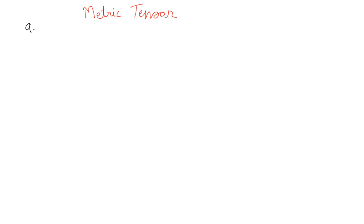Let's talk about the metric tensor, which we introduced in the last lesson. We know that what a metric tensor does is it produces the covariant component of a vector from the contravariant component, and vice versa. We have the equations: A_mu equals G_mu_nu A^nu, and similarly A^mu equals G^mu_nu A_nu.